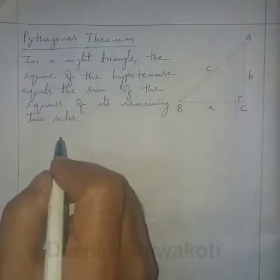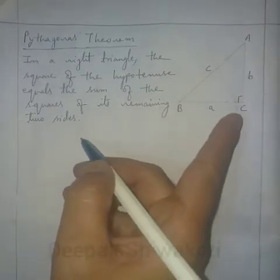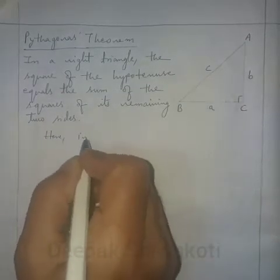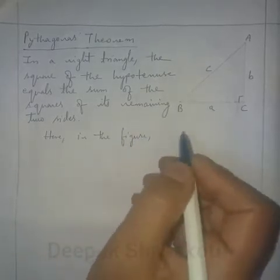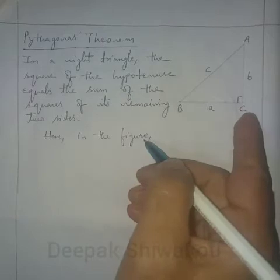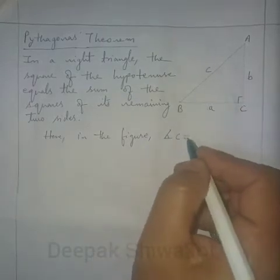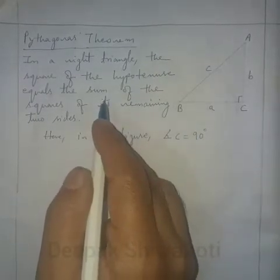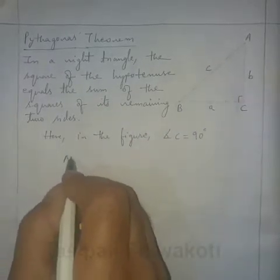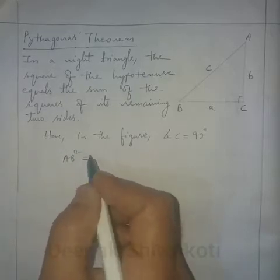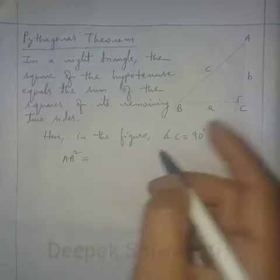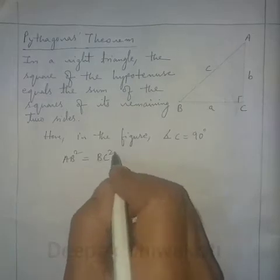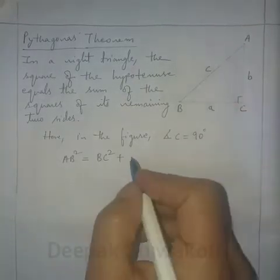In a right angle triangle shown in the figure, angle C equals 90 degrees. So according to this theorem, AB square — AB being the hypotenuse — is equal to the sum of the squares of the two sides, that is BC square plus AC square.